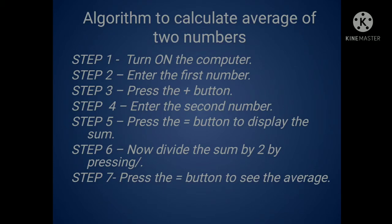Now step 6. Divide the sum by 2 by pressing slash. Now step 7. Press the equal to button to see the average. Now you can see that the calculation of two average numbers has been calculated.